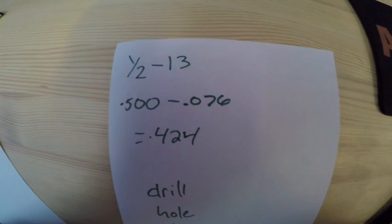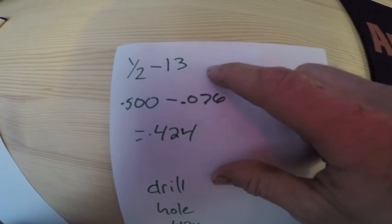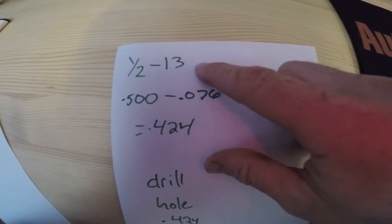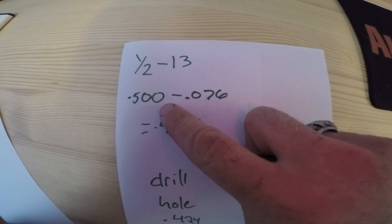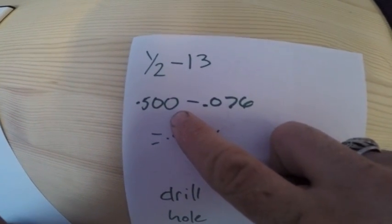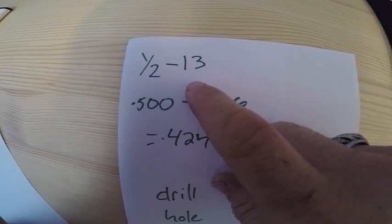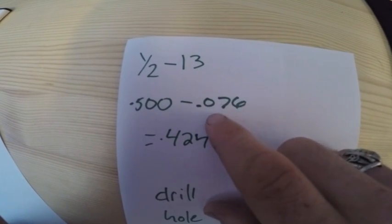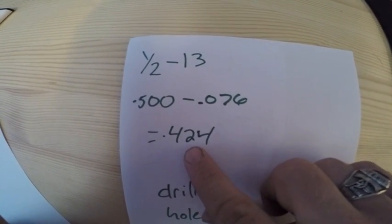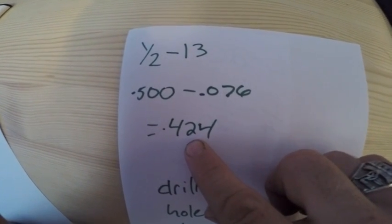And one more time here, so say you want to drill and tap for a half-13 bolt. You change your half to a fraction or from your fraction to a decimal, so you get 500. You change your 1 over 13 to a decimal, which gives you 76 thou, which now gives you 424.